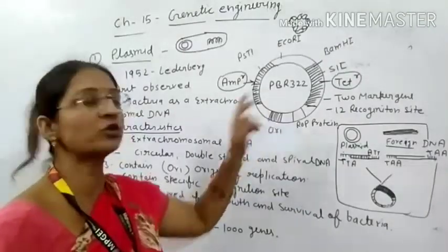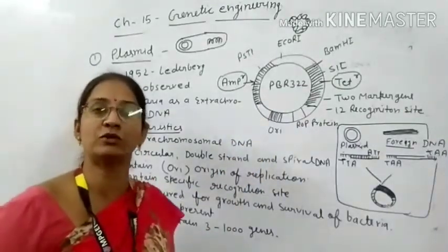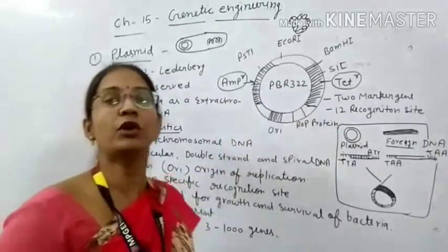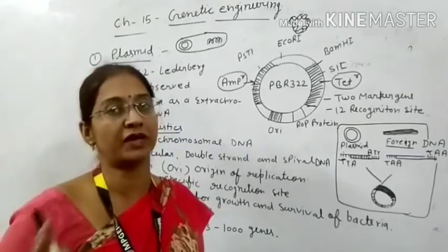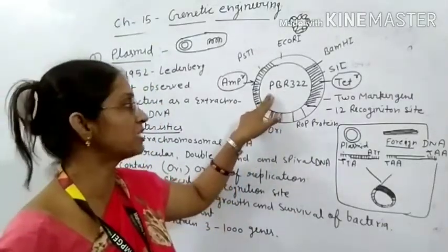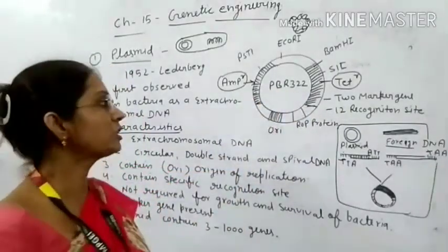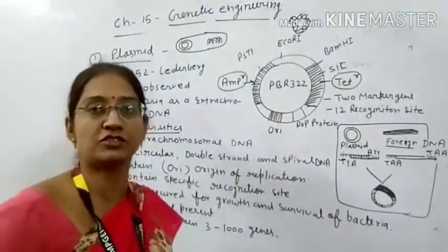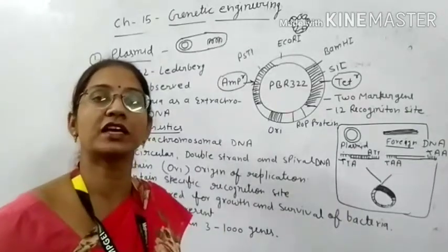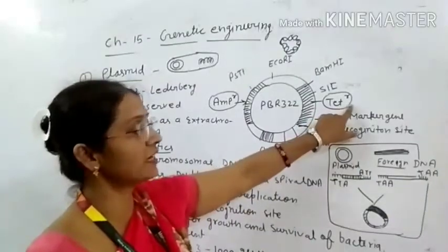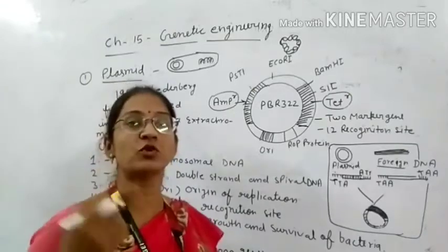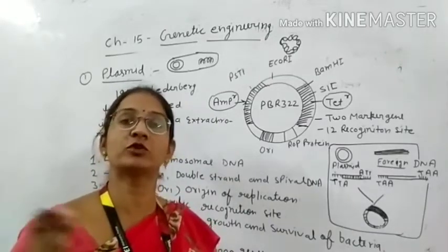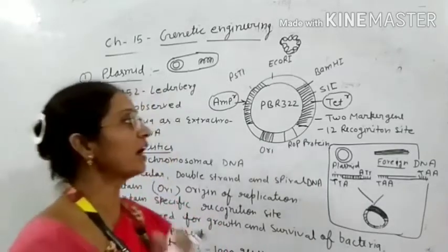These are the qualities of the plasmid. Now, the most commonly used plasmid is pBR322. P stands for Plasmid, B for Bolivar, and R for Rodriguez — this plasmid is called pBR322, named after Bolivar and Rodriguez. This plasmid has two resistance marker genes: ampicillin resistance and tetracycline resistance. These two marker genes tell us whether the cell has been transformed or not.